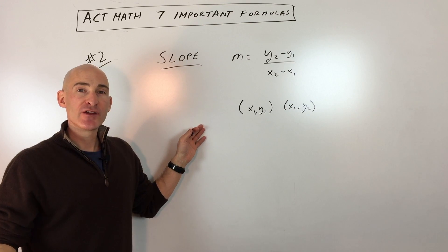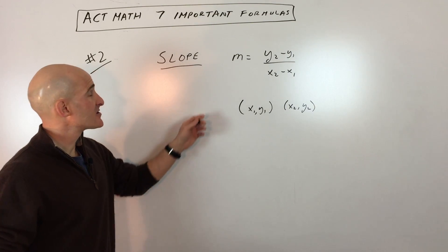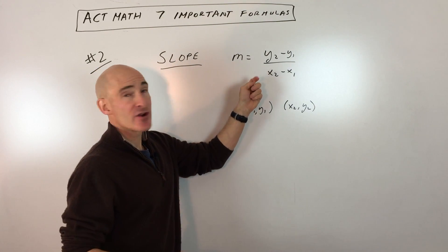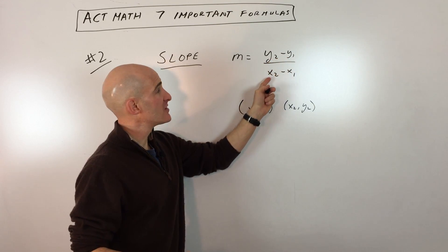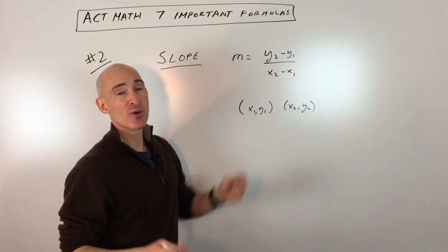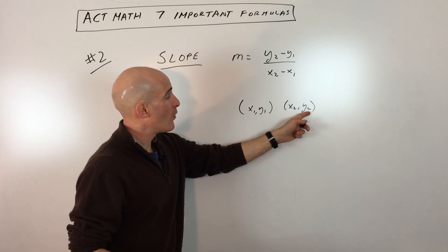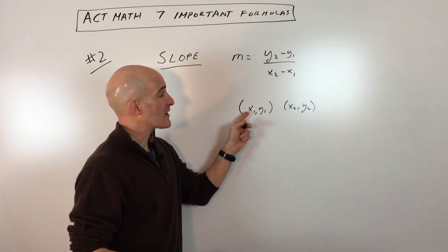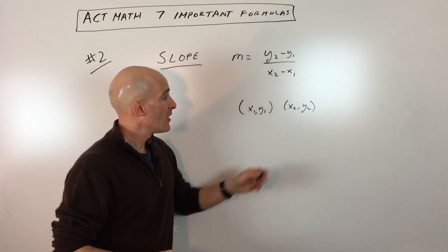The second formula that we're looking at here is slope, and that's another important formula to know for the ACT math section. And you can see the formulas right here, you learned this before in your math class, but basically you're taking the difference in the Y values divided by the difference in the X values. And one thing you want to pay attention to is that the order is important. So you can do Y2 minus Y1 over X2 minus X1, and that'll give you the slope or the angle of the line.